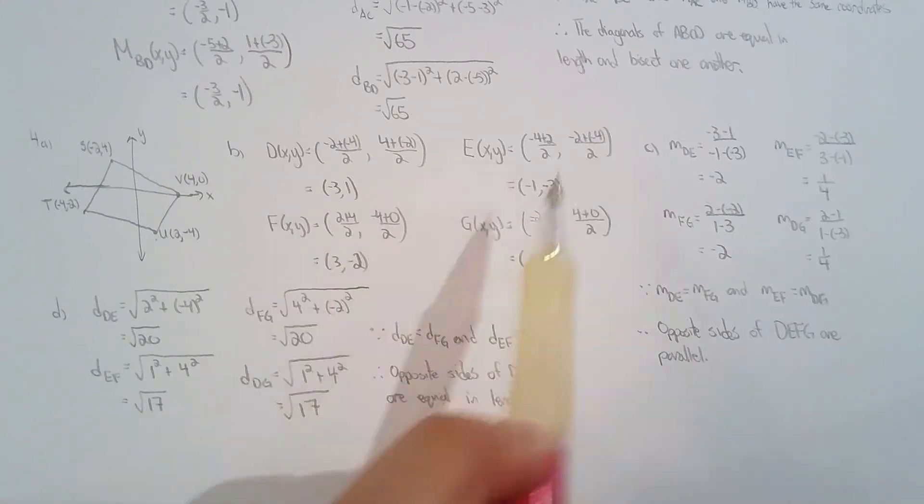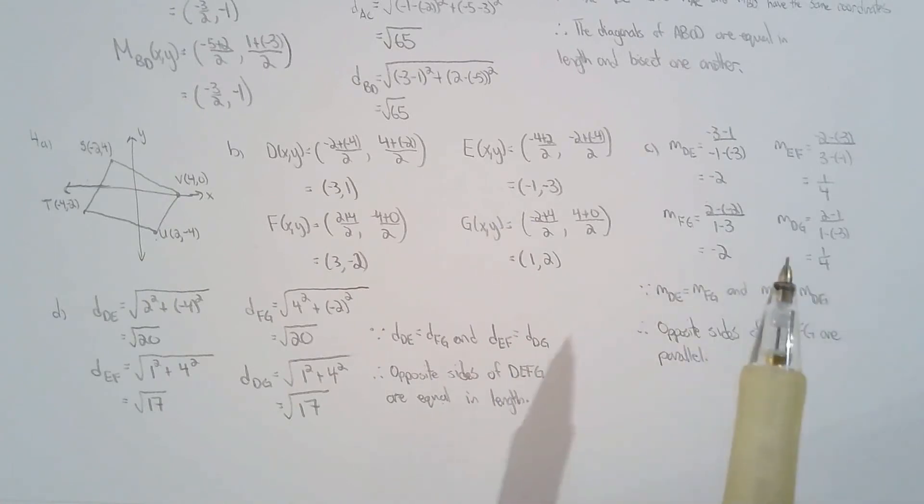So I found the midpoints and showed that opposite sides of this quadrilateral created by joining the midpoints are parallel. Then I also solved for the lengths of all four sides, which are equal, even though I didn't need to do that. I didn't need to do all four sides because once I established in part C that it was a parallelogram, I only need to solve for two sides.